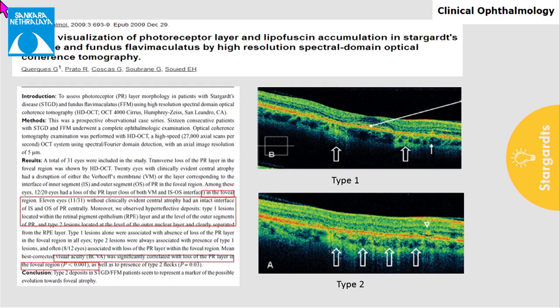A prospective observational case series on 16 patients with Stargardt's disease was done using SD-OCT, in which they found two types of flecks. Type 1 was located at the level of the RPE and type 2 was located at the level of the outer nuclear layer. This study showed that type 2 deposits were more associated with photoreceptor loss and progressive foveal atrophy compared to type 1.